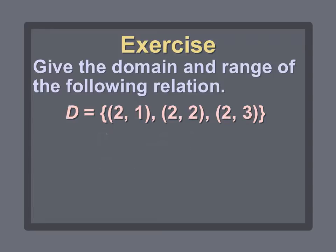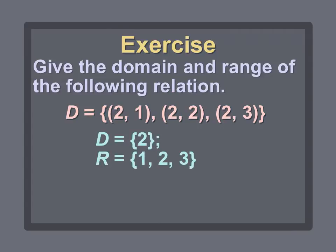Now we have relation D, and again we want the domain and range. My X values are 2, 2, and 2, so I only write 2 once. My domain is D = {2}. My range is my Y values: 1, 2, and 3. So my range is the set {1, 2, 3}.